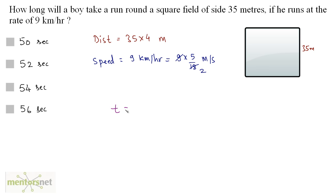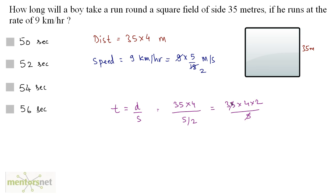Time equals distance upon speed. So this equals 35 times 4 divided by 5 by 2, which is 35 times 4 times 2 divided by 5. This is 7 times 2 which is 14 times 4, and 4 fours are 16, carry 1, 4 ones are 4 plus 1 is 5. So 56 seconds is the time taken by this boy. Option D is the correct answer.